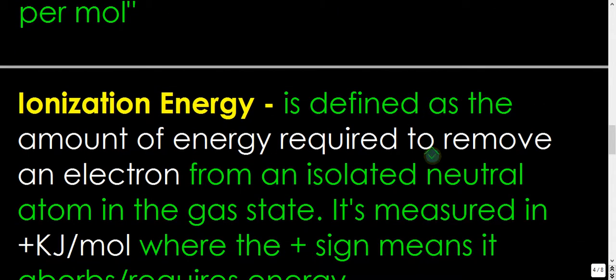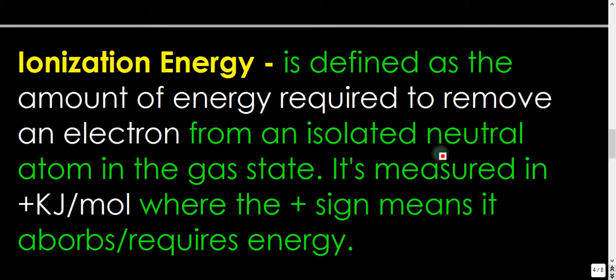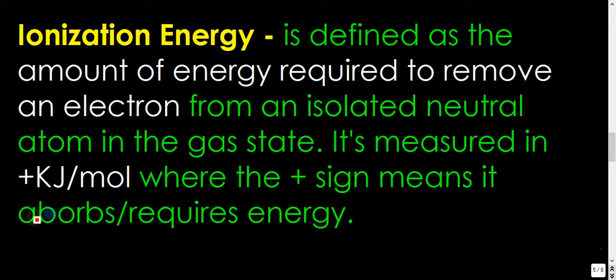Ionization energy is basically the opposite of electron affinity. And it's defined as the amount of energy required to remove an electron from an isolated neutral atom in the gas state. It's measured in kilojoules per mole. It's energy. These are both a measurement of energy. In the case of ionization, it's required. And in the case of electron affinity, it's released. So, the positive is absorbed or required energy.